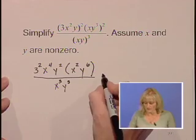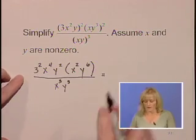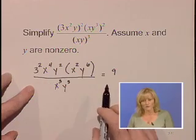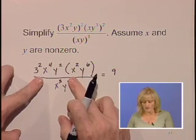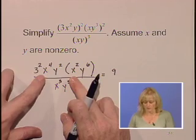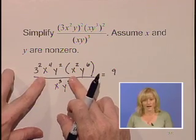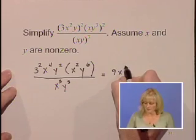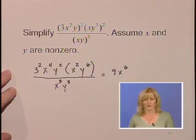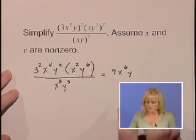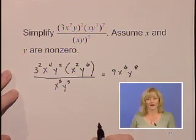Let's clean up this numerator. 3 squared we can easily compute to be 9. As we go left to right we're looking for like bases to again apply the properties of exponents where if we're multiplying like bases we add exponents. An x to the fourth and an x squared we have like bases. 4 plus 2 simplifies to an exponent of 6. A y squared and a y to the sixth power simplifies to y to the eighth.